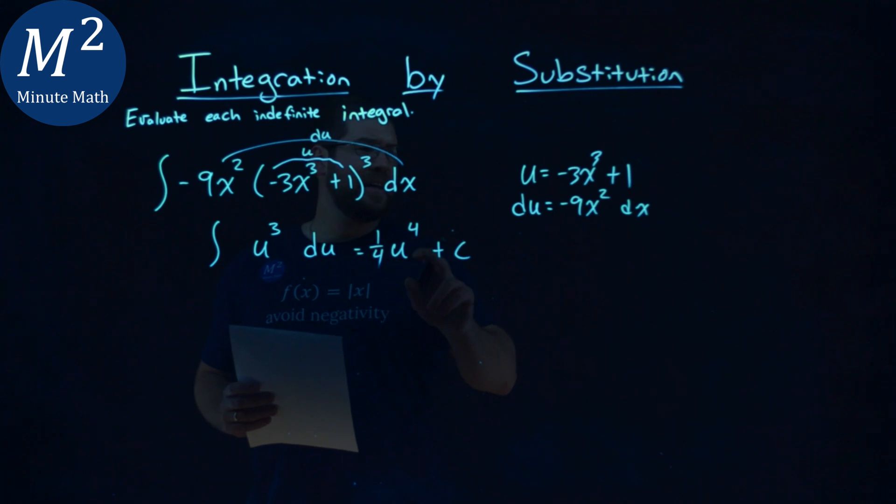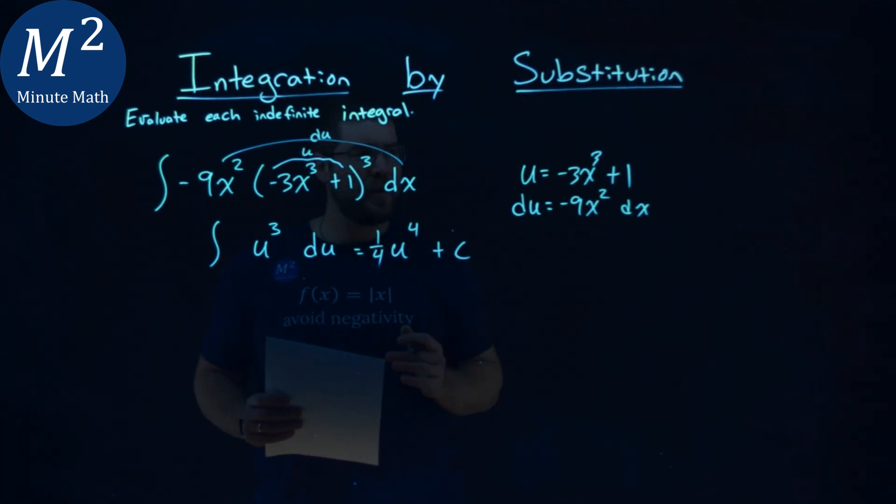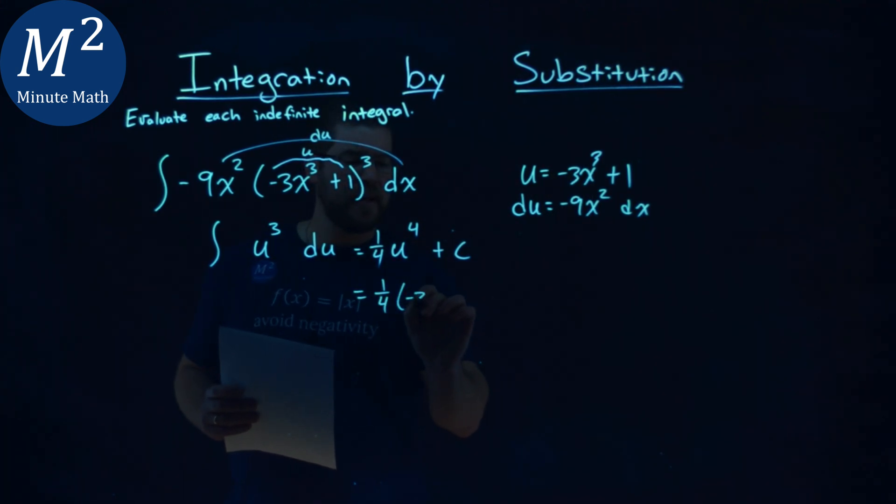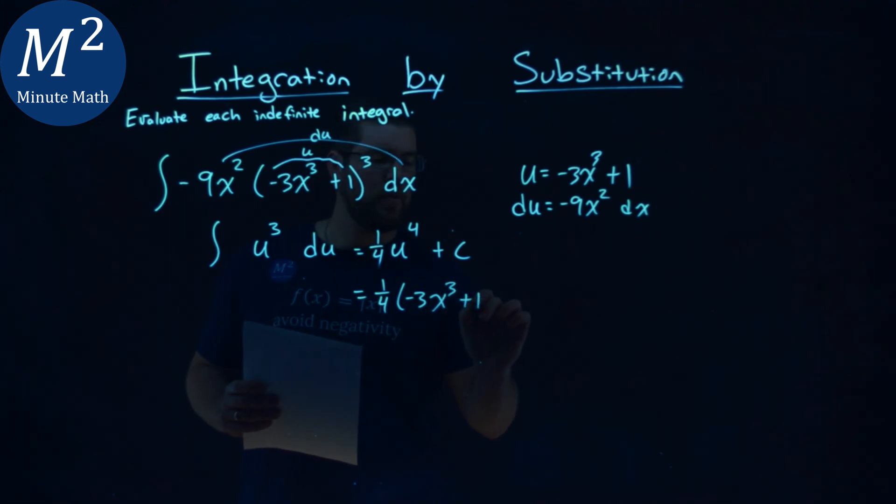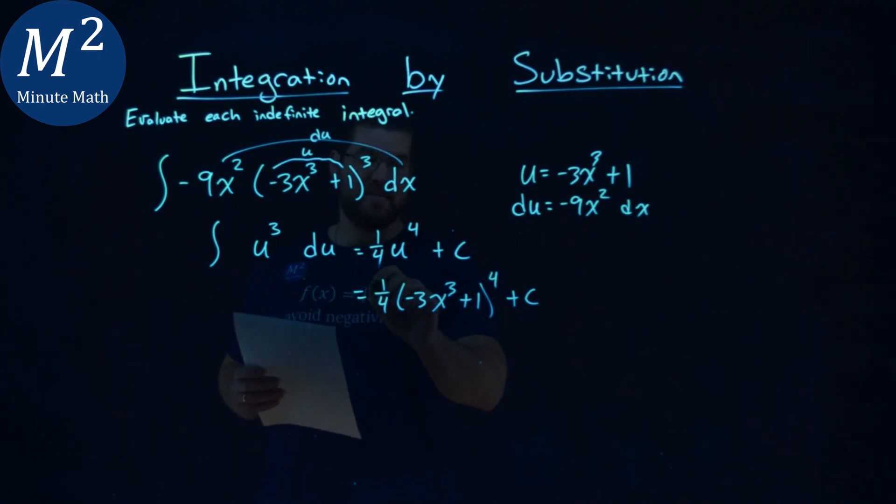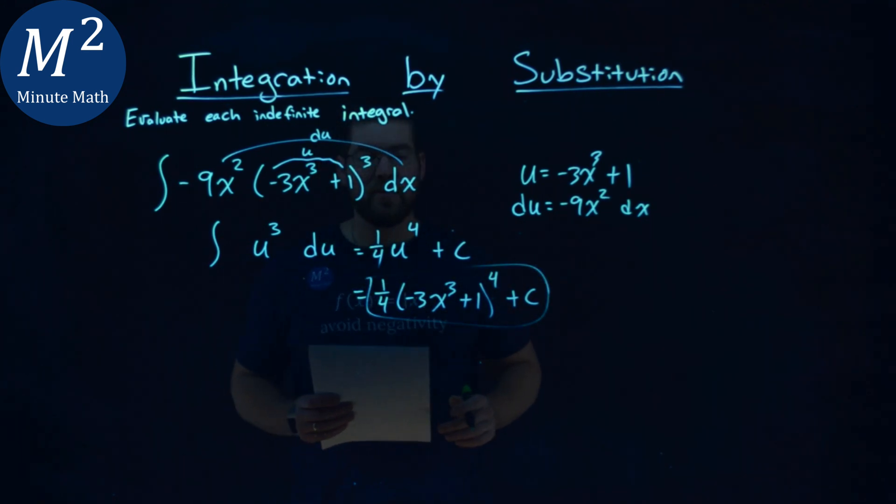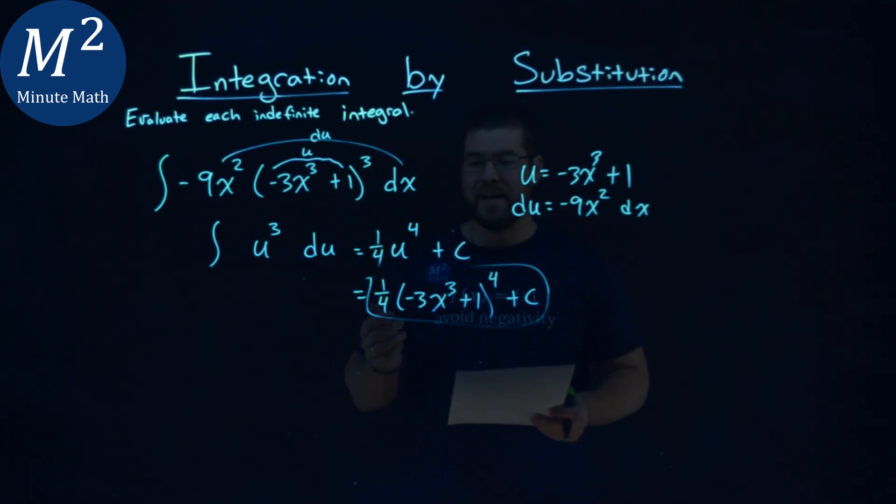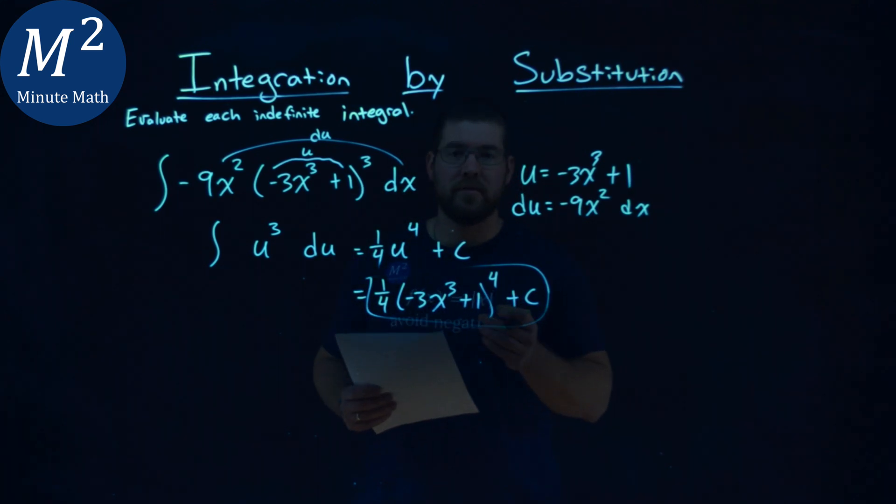Now we can plug back in u to be negative 3x to the third plus 1. One-fourth here, negative 3x to the third plus 1 to the fourth power plus c, and in my book, you're done. So the integral here is one-fourth times negative 3x to the third plus 1 to the fourth power plus c.